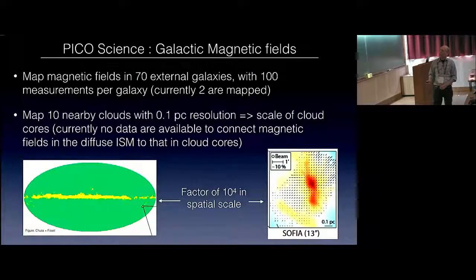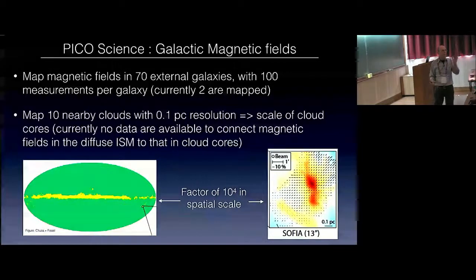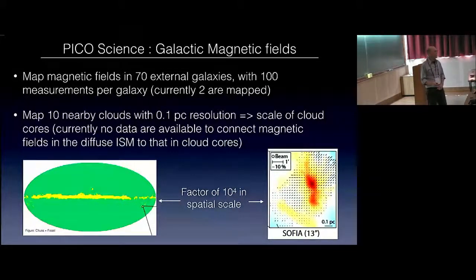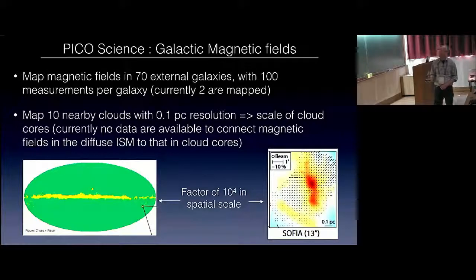In addition, we will map magnetic fields in 70 external galaxies with 100 measurements per galaxy. Currently, we have only two that are mapped. And for 10 nearby clouds with 0.1 parsec resolution, we would map the scales at which stars are forming. This would be the first such measurements.